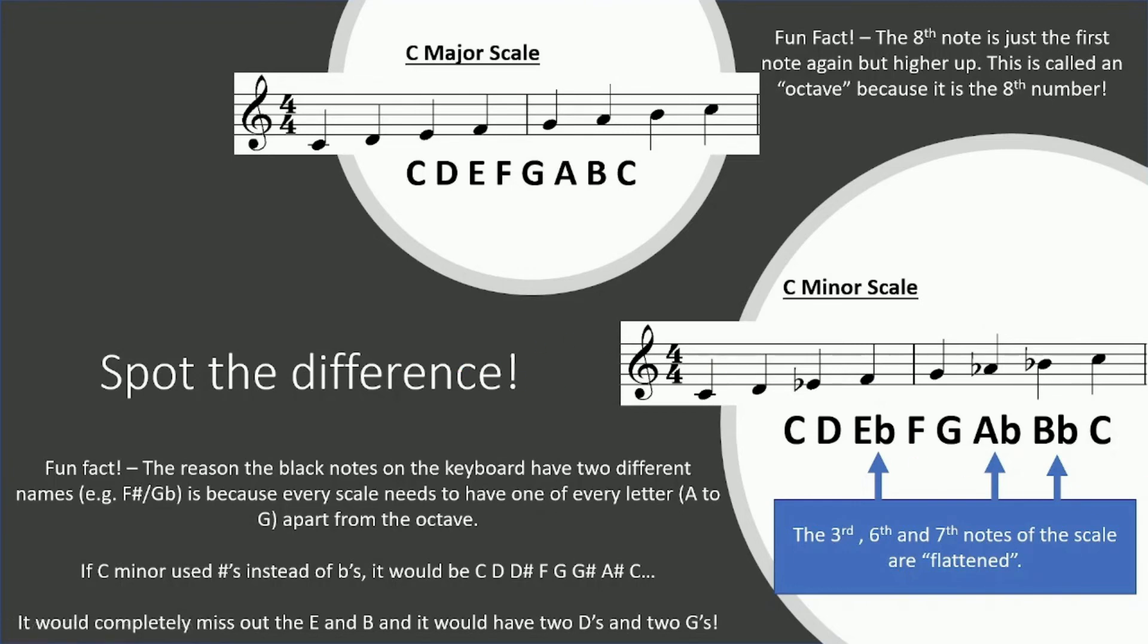So first of all, before we go any further, fun fact. The reason the black notes on the keyboard have two different names, such as F sharp and G flat, is because every scale needs to have one of every letter, A through to G, apart from the octave obviously. If C minor used sharps instead of flats, it would go as follows: C, D, D sharp, so repeating the D, F, G, G sharp, repeating the G, then A sharp, and then C, missing out B entirely. Whereas if we use flats, as you can see, it's got one of every letter of the musical alphabet, which goes from A to G, then repeats.